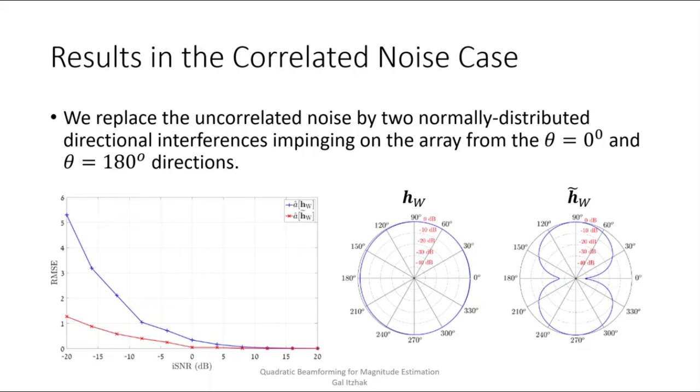Okay, so we now turn to the correlated noise case. We maintain the same simulation settings of the uncorrelated noise case, but replace the uncorrelated noise by two directional interferences impinging on the array from theta1 equals zero and theta2 equals 180 degrees. And we examine the RMSE with the two Wiener beamformers, as well as the respective beam patterns, or power beam patterns in the case of the quadratic Wiener.